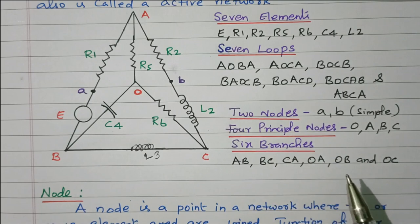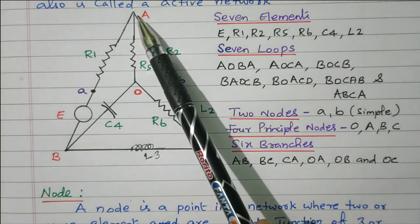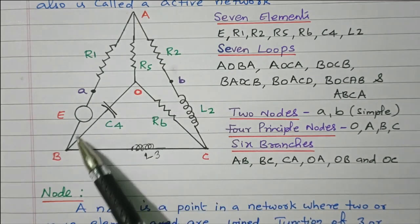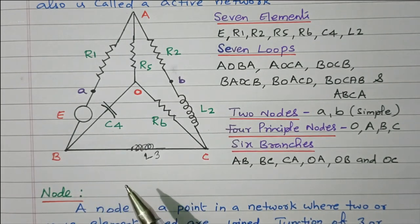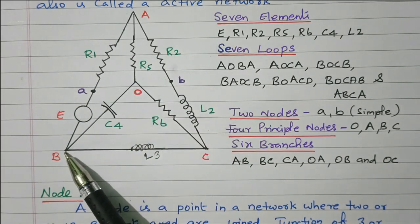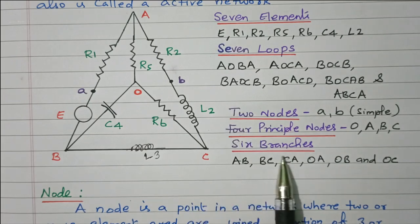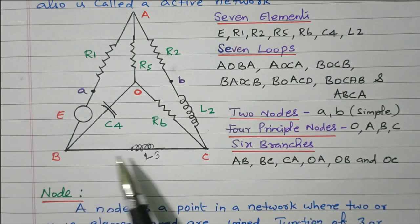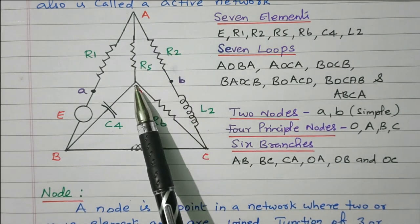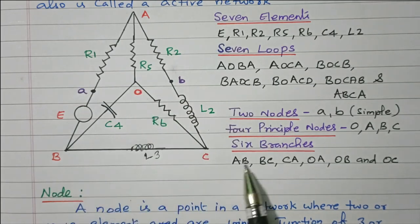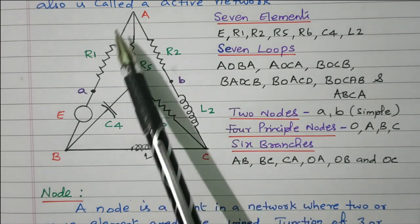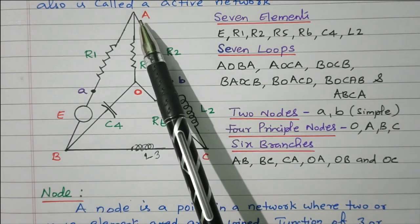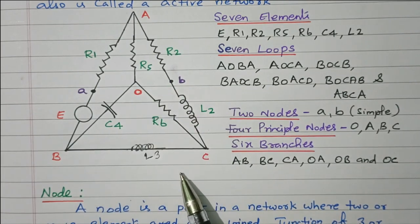Next we will see branches. What is meant by a branch? An element connected between two principal nodes is called a branch. Between nodes A and B is one branch. There are six branches available: A–B, B–C, C–A, A–O, O–B, and O–C. The element or elements in series connected between two principal nodes is called a branch.